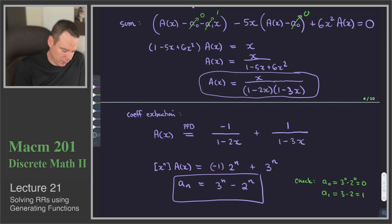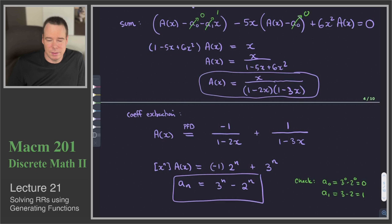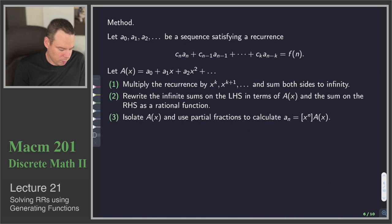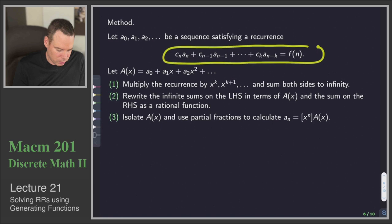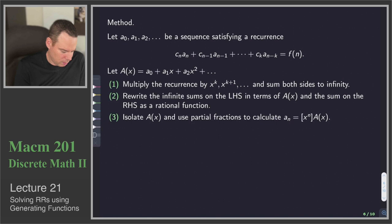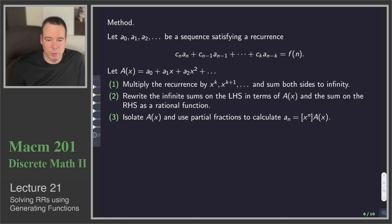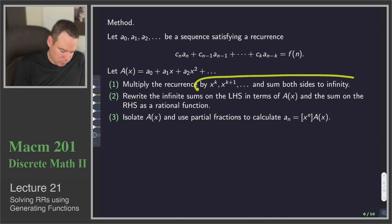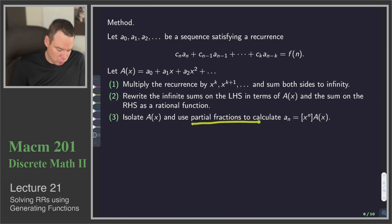The general method for solving a recurrence relation using generating functions: take the sequence defined by the recurrence, put it as coefficients of a generating function A(x), set up equations by multiplying through by powers of x, rewrite the infinite sums in terms of A(x) with the right-hand side as a rational function, isolate A(x) to get it in rational form, and then use partial fractions to do coefficient extraction.